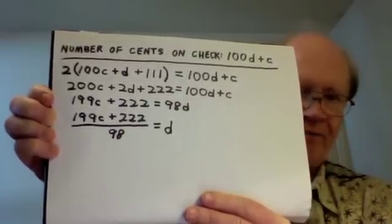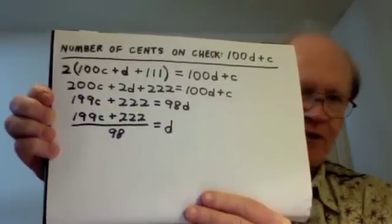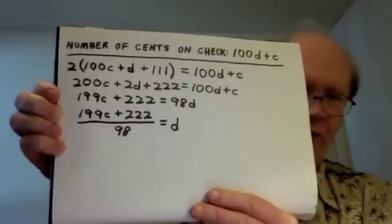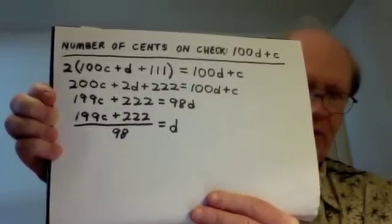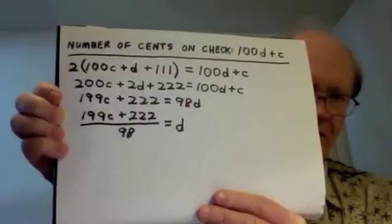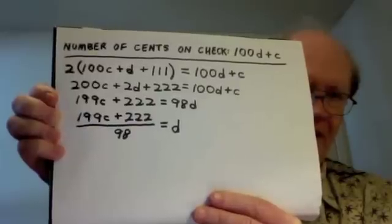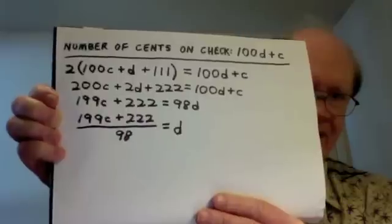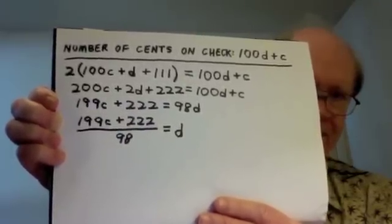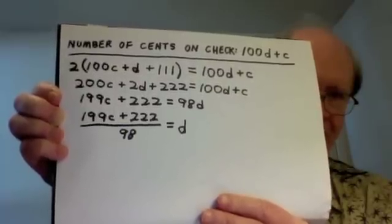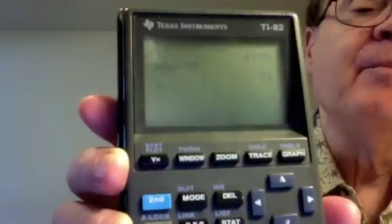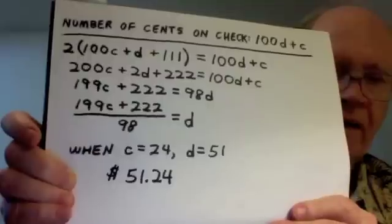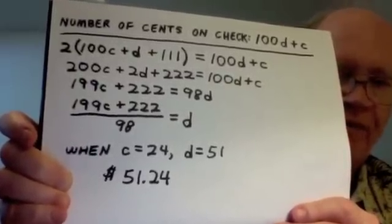So I took my calculator and I set C equal to 2, put that fraction into my calculator, and I got D to be not a whole number but a whole number followed by a decimal point and a lot of numerals. So C can't be 2. I tried C equal to 4 — the same thing happened. I got not a whole number but numbers after a decimal point. I tried C equal to 6, then 8, then 10, then 12, then 14, 16, 18, 20, and 22 and the same thing happened. I got D not to be a whole number.